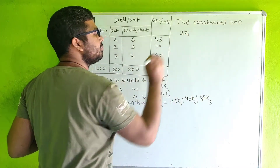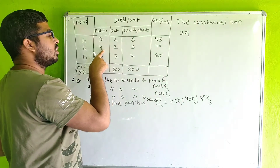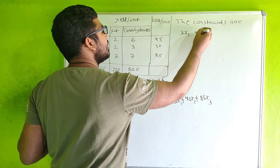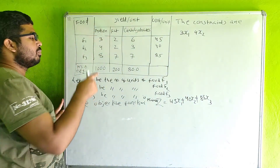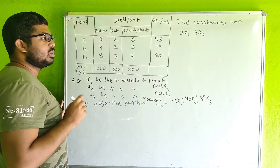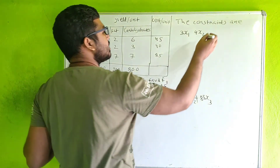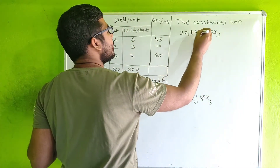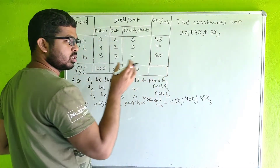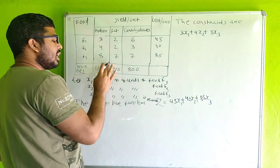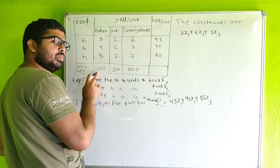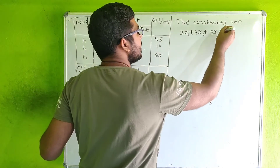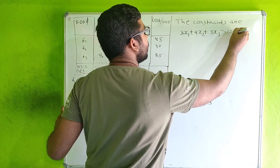The objective function is: minimize Z = 45x1 + 40x2 + 85x3. Now the constraints. For protein: 3x1, plus 4x2 per unit of F2, plus 8x3 per unit of F3. The total protein must be at least 1,000 units — greater than or equal to 1,000.